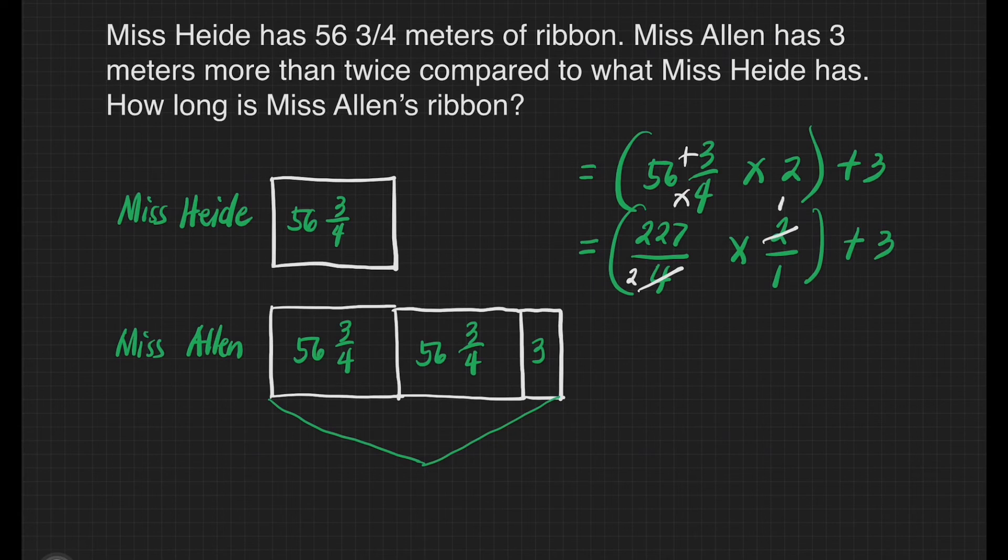So we have here 227 over 2, then plus 3. So we will divide first 227 by 2. Then whatever is the answer, we will add it to 3.